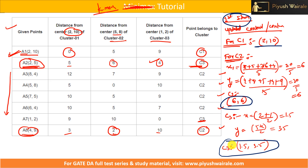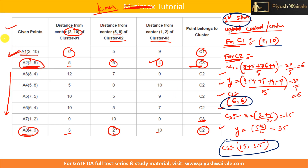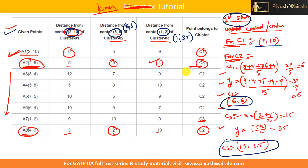So we go back to our question: the three cluster centers after the first iteration are C1 = (2,10), C2 = (6,6), and C3 = (1.5, 3.5). This is the answer. In the second iteration, you need to repeat the process — find the distance of all eight data points from all three clusters, but using the updated cluster centers. In the GATE exam, they will ask for either first or second iteration — up to second iteration only.